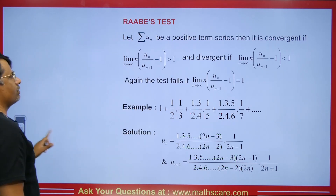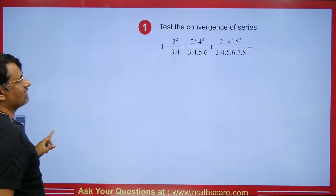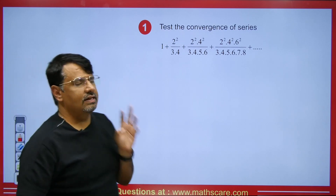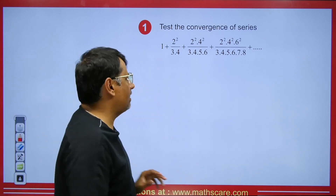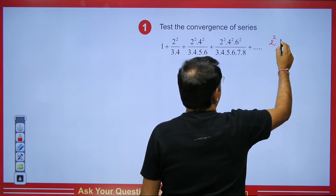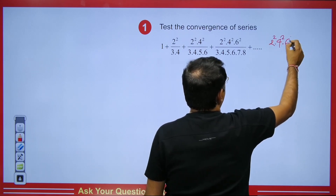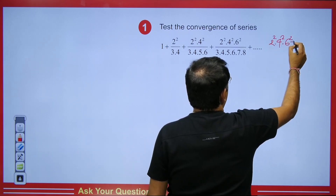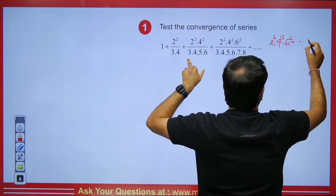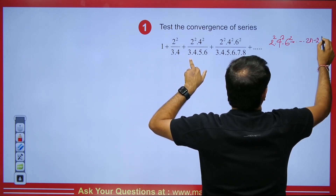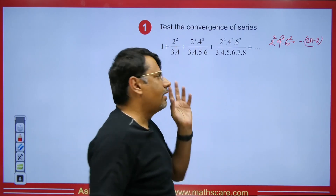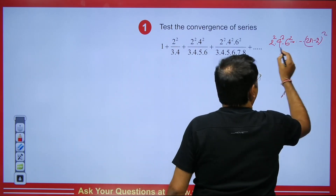Next, I will explain another question. Here we are given a series and need to find if it is convergent. First, we write the nth term. The numerator has 2², 4², 6² — so the numerator goes up to (2n − 2)², with a square on each factor.